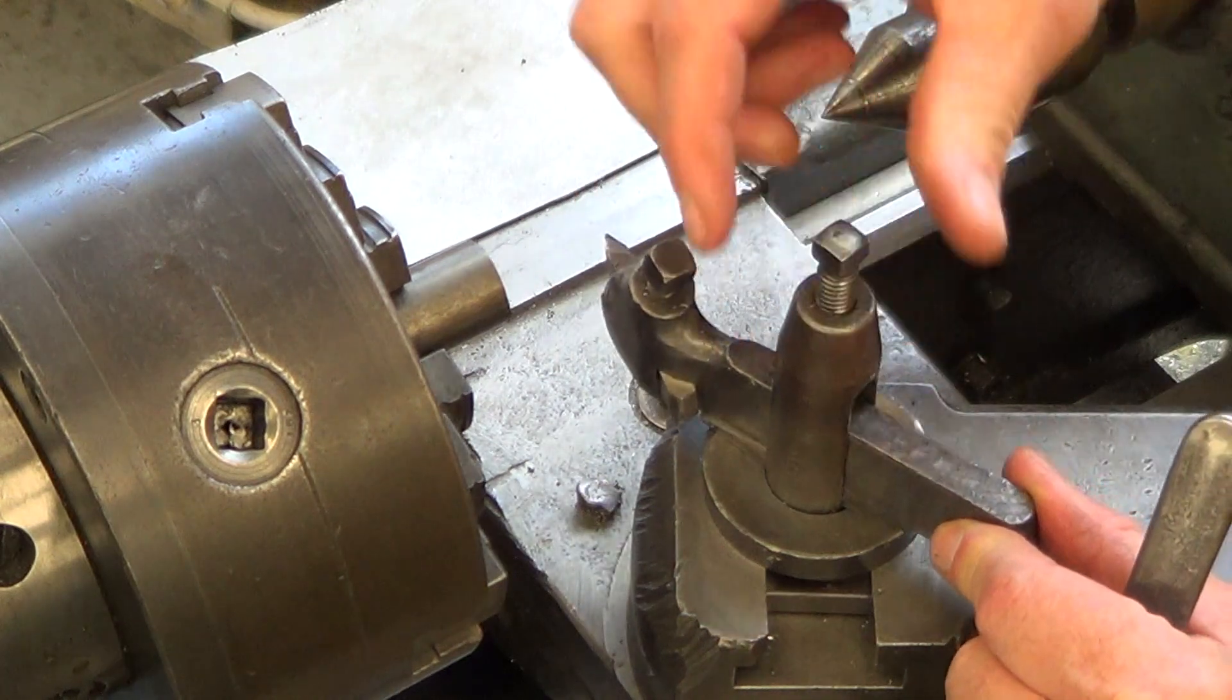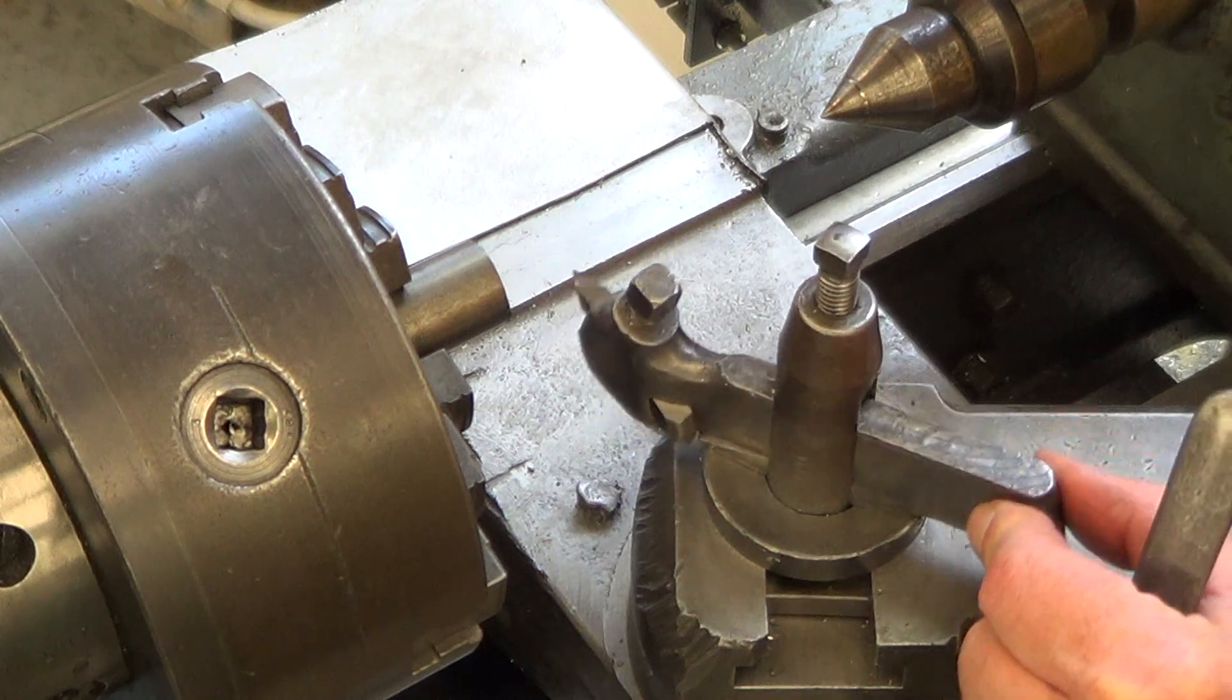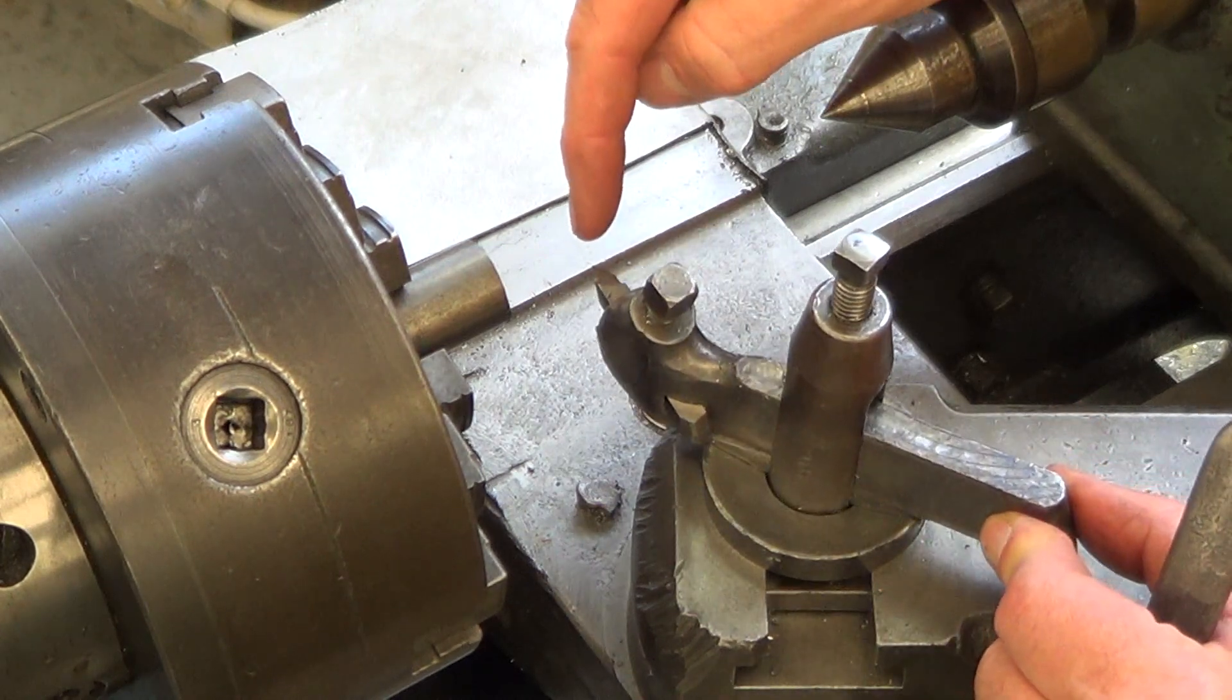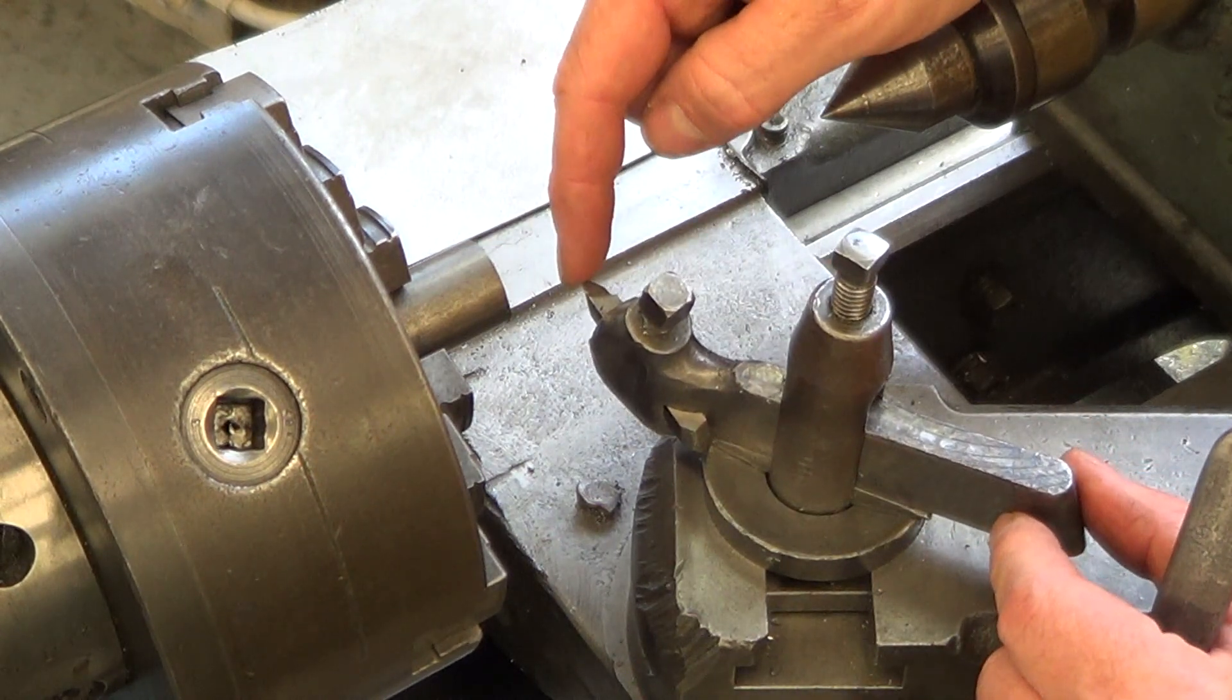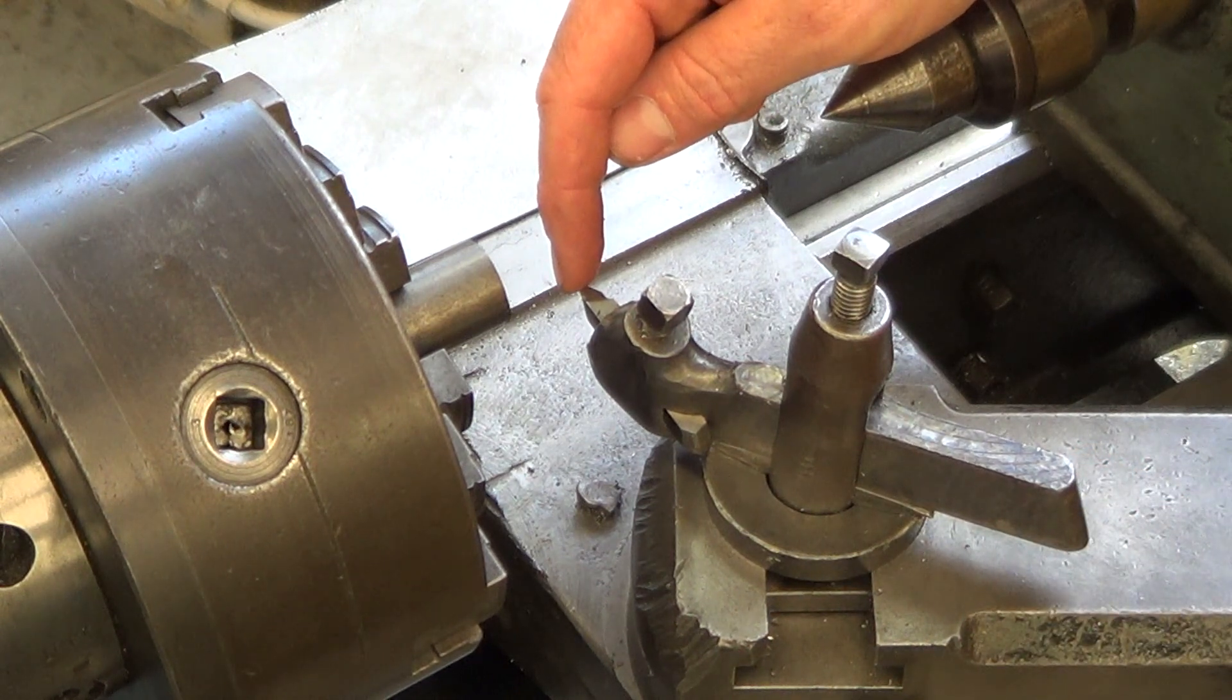It's in what's called the tool post. The tool post swivels like this, allowing you to set the cutter in whatever desired position you need. The very tip of the cutter right here is called the nose. It's extremely sharp. That's where all the cutting has to be done, on the nose.